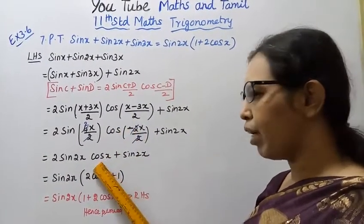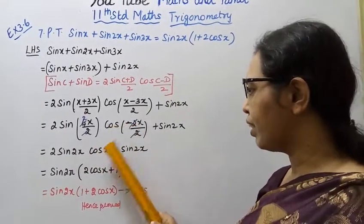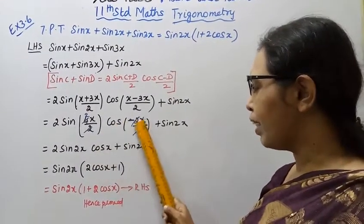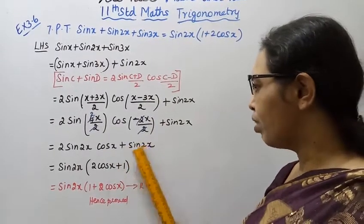Now, cos of minus theta equals cos theta. This is an important property. So cos of minus x equals cos x. Therefore we have 2 sin 2x cos x plus sin 2x.